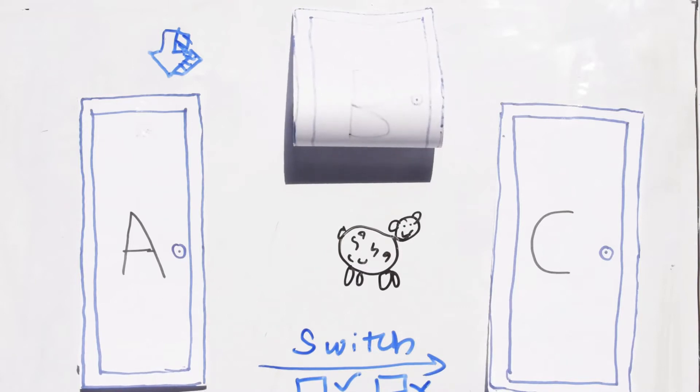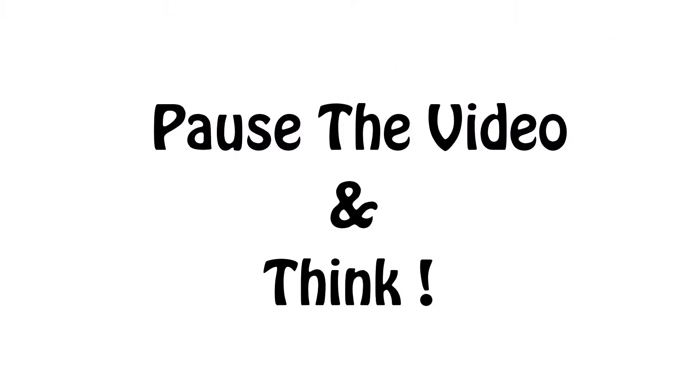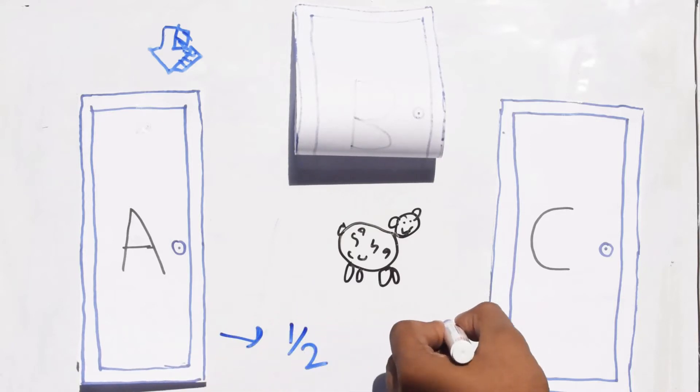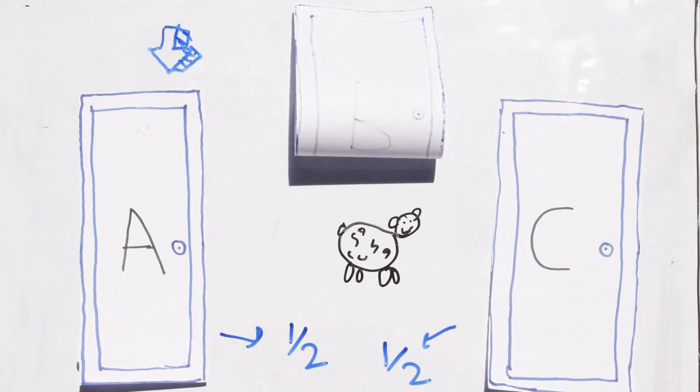Now the question is, should you do it? On an initial guess, the probability of the million dollars being behind the door you initially chose and the remaining door seem equal, 50-50, right?